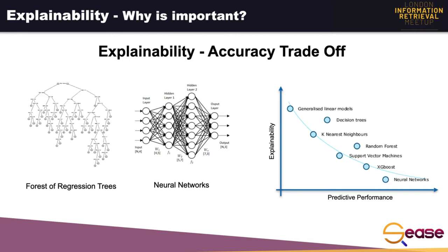White box models produce explainable results. Models like random forests and neural networks are called black box models. In fact, if you take a look at these models, you can spend hours just trying to understand what is going on there. We are more likely to obtain improved predictions with these models, but on the other hand, they are not readable for humans. So during the last years, the interest to explain them has increased too.